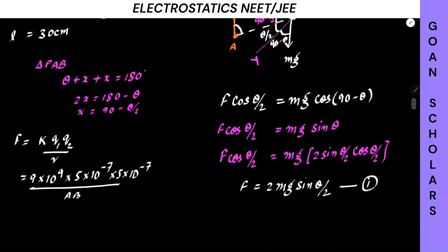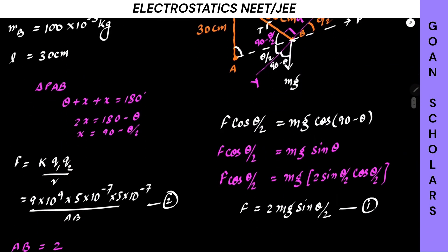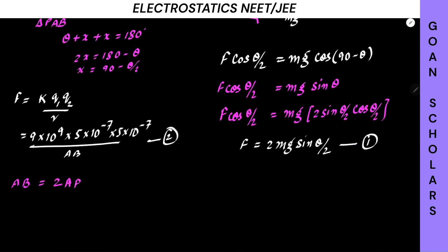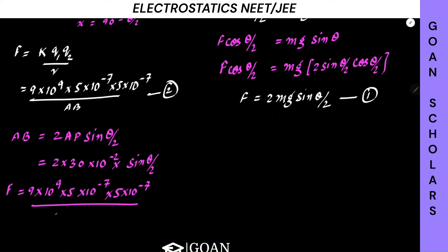So AB = 2 × AP × sin(theta/2) = 2 × 30 × 10⁻² × sin(theta/2). Now substituting into Coulomb's law F = KQ₁Q₂/R², where K = 9 × 10⁹, Q₁ = Q₂ = 5 × 10⁻⁷ C, and R = AB = 60 × 10⁻² × sin(theta/2). We substitute this F into equation 1.